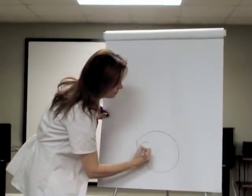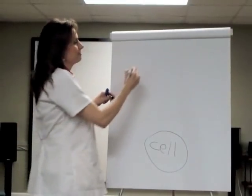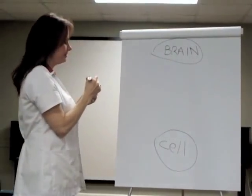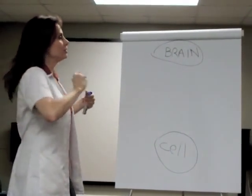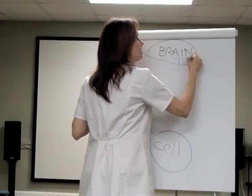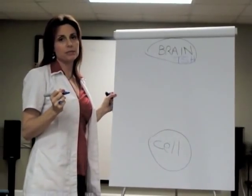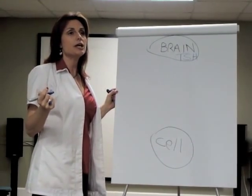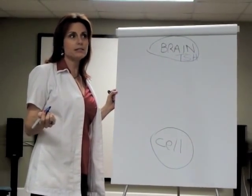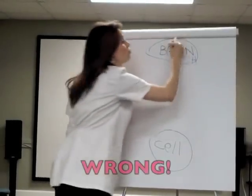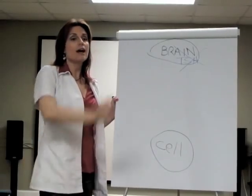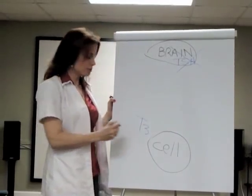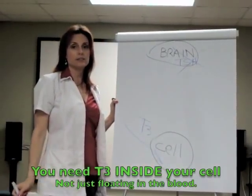We're going to talk about thyroid hormone. This is a cell and this is your brain — not drawn to scale — but I want to show you what happens to thyroid hormone between the brain and the cell. Let's talk about TSH. TSH stands for thyroid stimulating hormone; it's a brain hormone. Doctors are measuring TSH levels and suggesting thyroid treatment based on that — but what I care about is how much T3, or thyroid hormone, actually gets into your cell. That's the big deal.